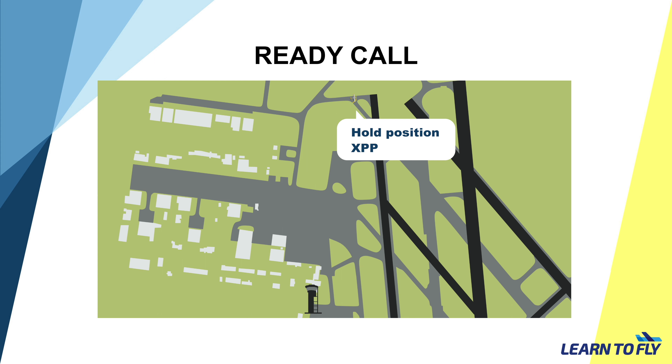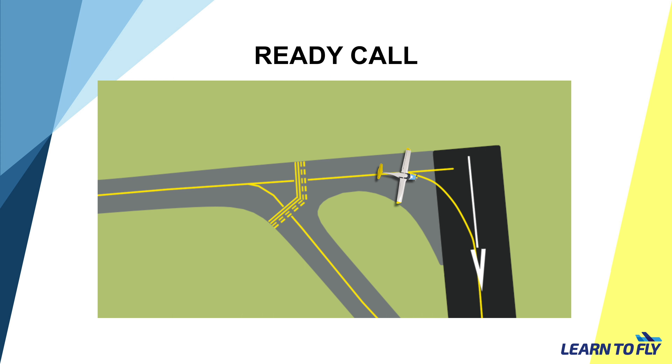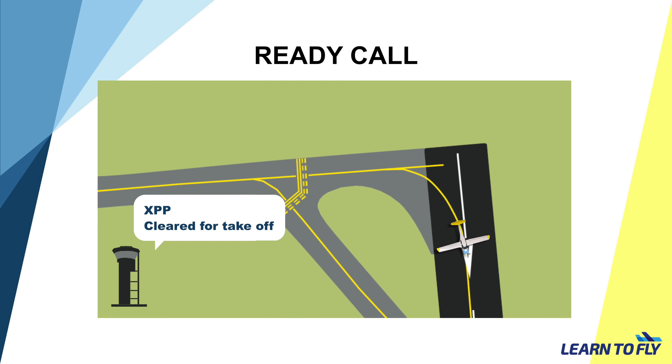After completing the line-up checks, we're now ready for takeoff. We then have to make a radio call to tower to let them know that we're ready. The tower frequency varies depending on which runway we are taking off from. At Moorabbin Airport, the tower frequency for all of the eastern runways is 118.1, and for the western runways it is 123.0. When using runway 17R, because it is the western runway, the frequency would be 123.0. So now let's make a radio call: 'Moorabbin Tower, X-Ray Papa Papa Papa, runway 17R, upwind departure, ready.'